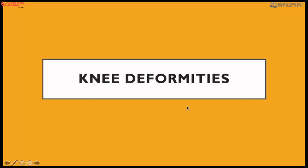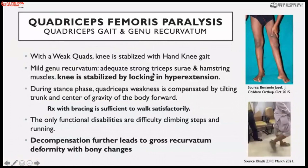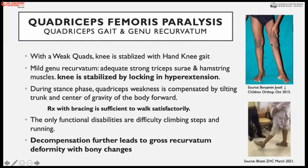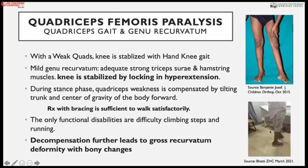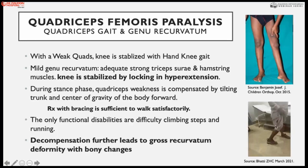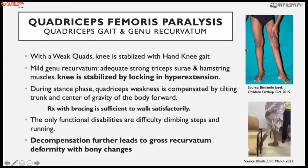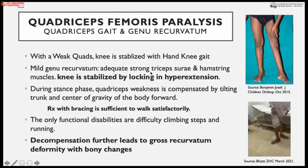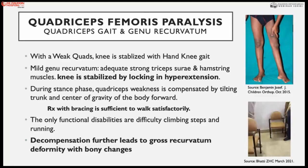Knee deformities are mostly produced due to posture, weakness of the quadriceps, strong iliotibial band contractures. Quadriceps femoris paralysis initially produces a handy gait, but in the chronic phase with bony abnormalities, laxity of posterior ligaments, and strong biceps muscles, it produces a genu recurvatum gait. There is mild genu valgum deformity due to strong biceps and hamstring muscles, and the knee is stabilized by locking into hyperextension.